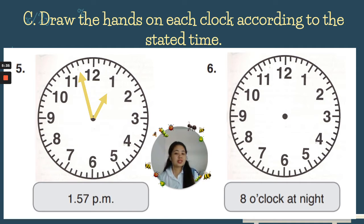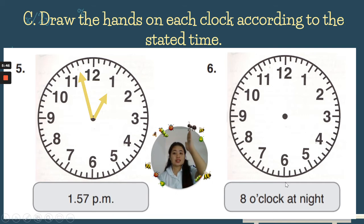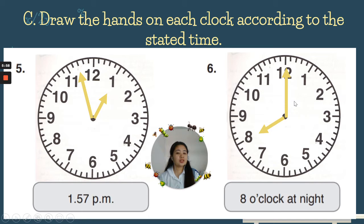Number six: eight o'clock at night. O'clock means the long hand points at twelve. First find eight for the small hand — eight is here. Then the long hand is at twelve. The time is eight o'clock at night. Good job!